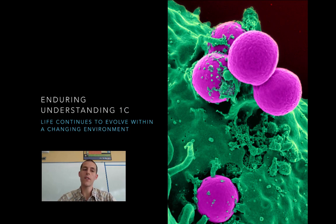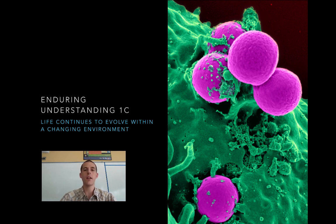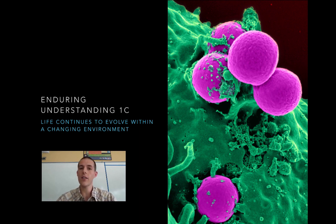Enduring understanding 1C is that life continues to evolve within a changing environment. Evolution did not stop billions of years ago — it is an ongoing process we can observe today. An example is MRSA, the bacteria you see on screen, which is a strain resistant to multiple forms of antibiotics. Every time a new antibiotic comes out it kills most bacteria, but the ones with variation that allows resistance will reproduce, forming a new strain. So evolution is an ongoing process we can still observe today.